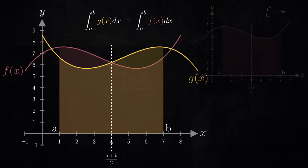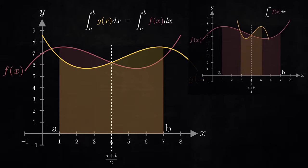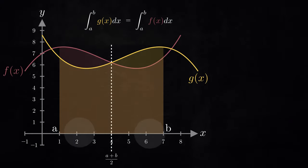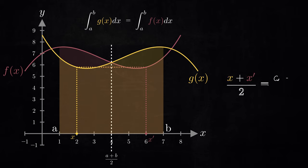Recollect that g is obtained by flipping f about the axis x equals a plus b over 2. And this means that the input points x and x prime corresponding to equal heights of the graphs g and f respectively must be equidistant from the flipping axis. Or in other words, the average value of x and x prime must be equal to a plus b over 2.